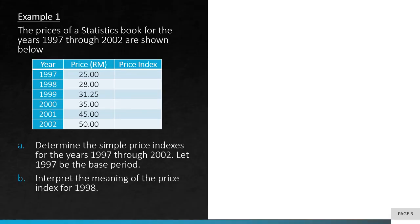Let's try example one. The prices of a statistics book for the years 1997 through 2002 are shown. Part A: determine the simple price index for the years 1997 through 2002, given that 1997 is the base period. The formula is current price over base price times 100. For 1997, the base price and current price are both 25, so 25 over 25 times 100 equals 100 — that is why the index for the base period is always 100.